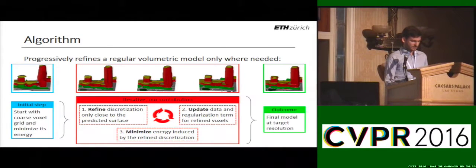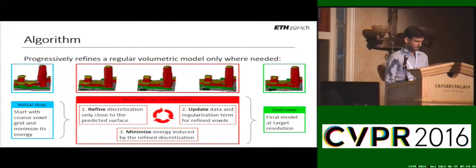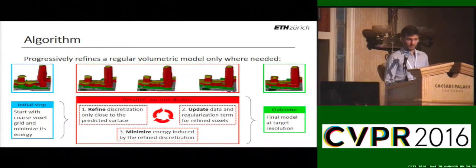This shows the algorithm at a glance. We start with a coarse voxel grid with equally sized voxels and minimize its energy. We then refine the discretization only close to the predicted surface, update the data and regularization terms for the refined voxels, and finally minimize the energy induced by the refined discretization. The steps in the red box are performed iteratively until our model reaches a desired target resolution, and this red box also contains our contribution.